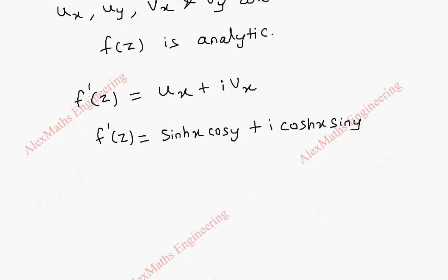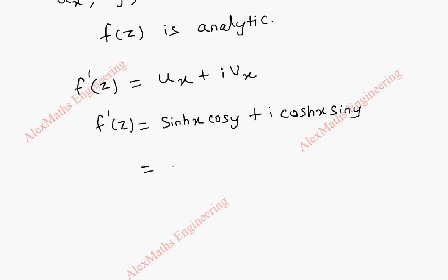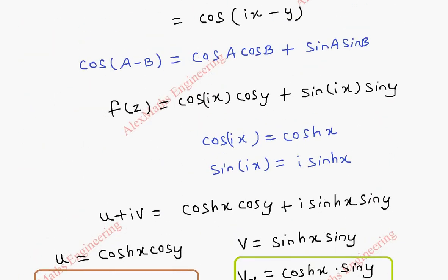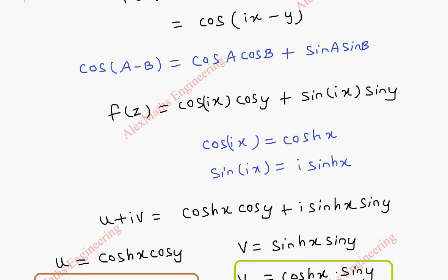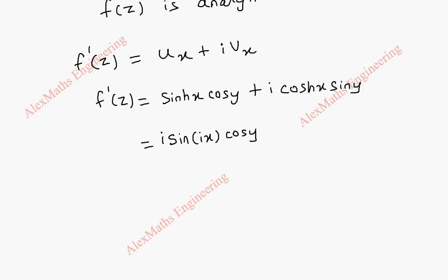But this can be further simplified. This can be written as, sin ix into i. And cos y is written as this. Actually, the sinh x formula already we have used here. So, sinh x will be sin ix by i. So, you have to divide by i here. By i.